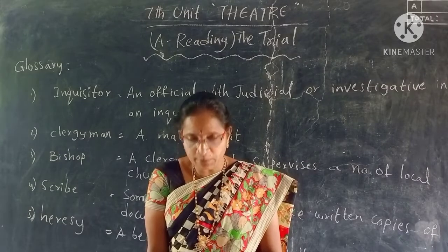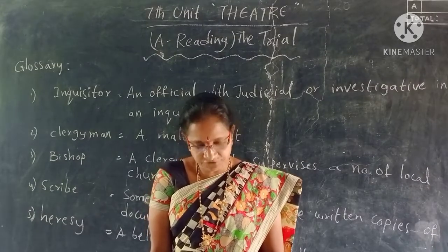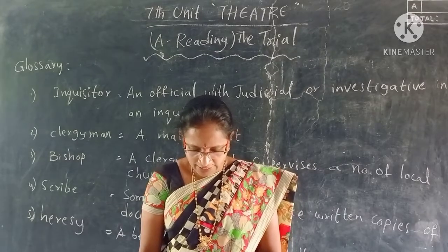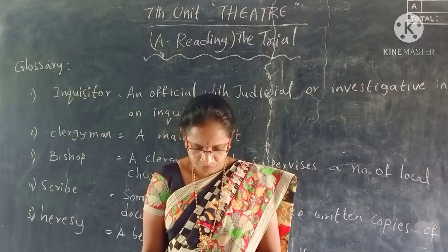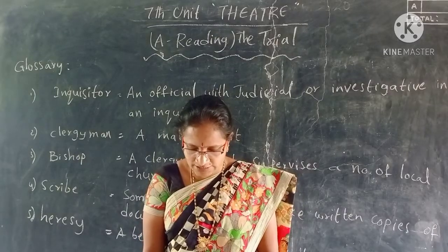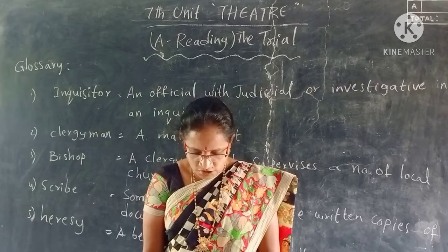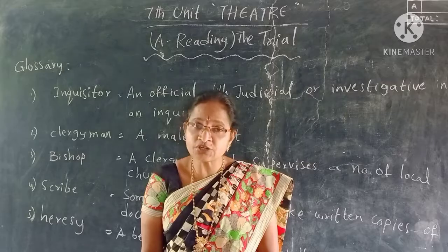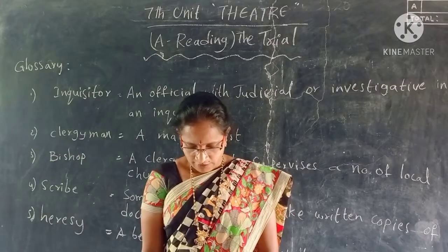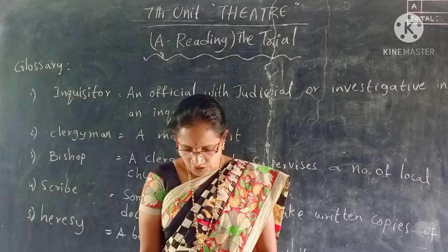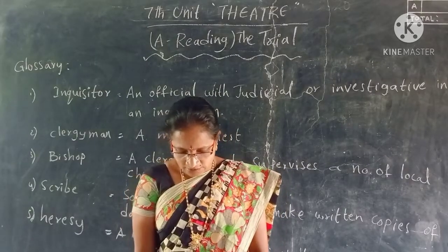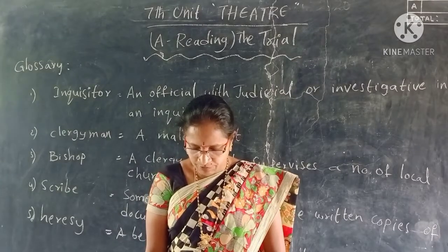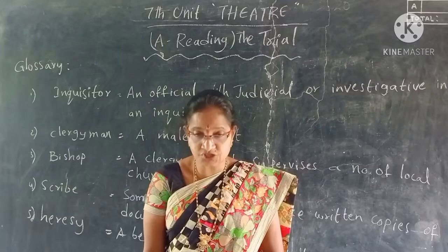The Inquisitor: 'Let the accused be brought in.' Lavenu: 'Polly, the accused, let her be brought in.' Joan, chained by the ankles, is brought in through the arched door behind the prisoner's stool by a guard of English soldiers. With him is the executioner and his assistants. They lead her to the prisoner's stool and place her just behind it after taking off her chain.